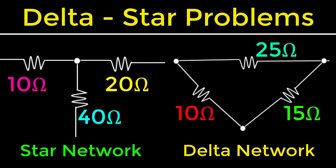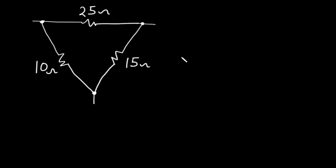In today's video we are going to practice how to find the total resistance of a circuit using the star-delta or delta-star approach. I uploaded a video recently where I explained the concept behind the star-delta network and how to convert from delta to star and vice versa. What we are going to do today is solve a lot of examples, so let's begin.